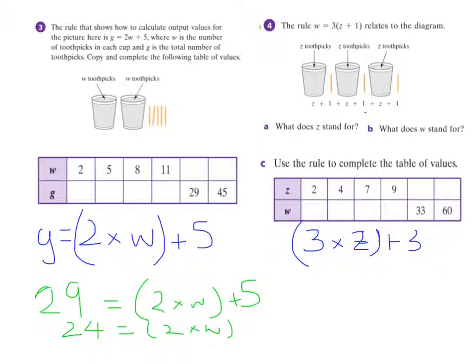And obviously this one is going to be similar — I have to take my 3 away from it first and I get 3 times Z, and I've got to figure that out. I'll let you try and figure it out.